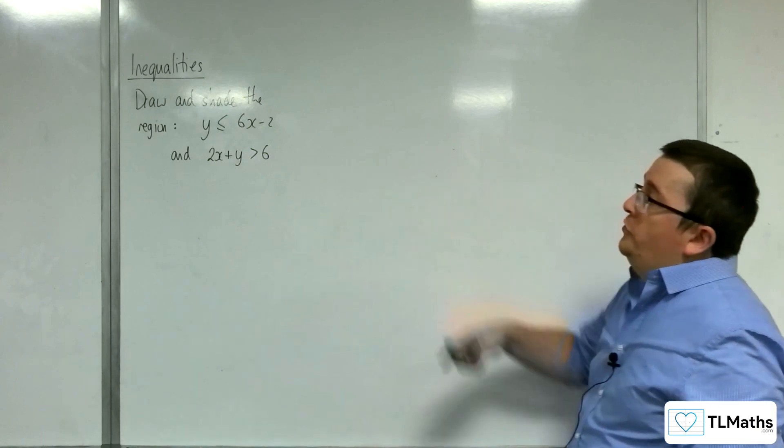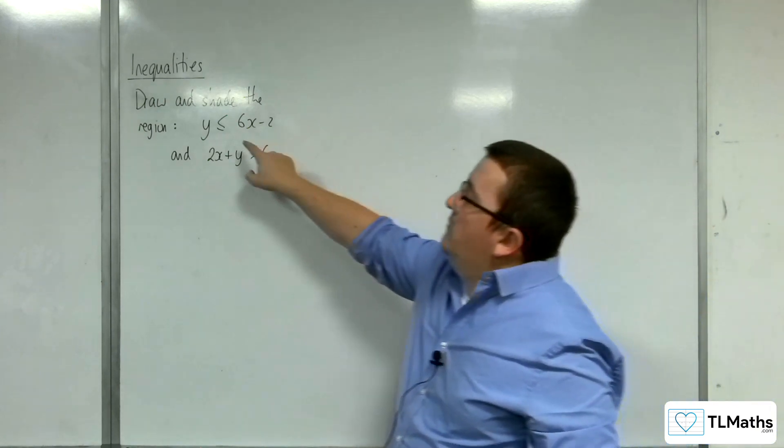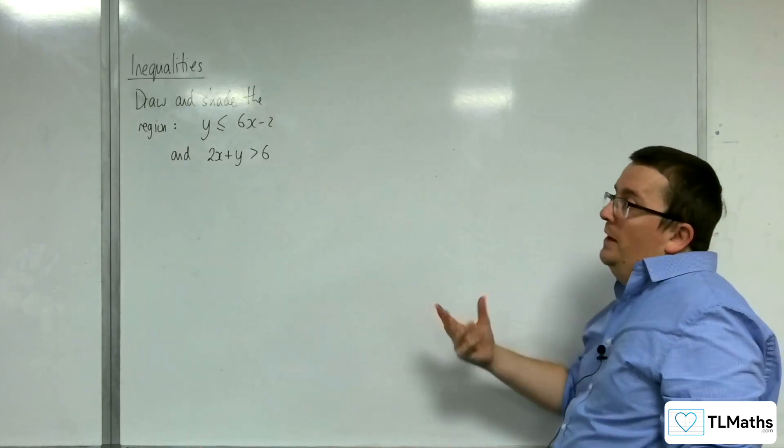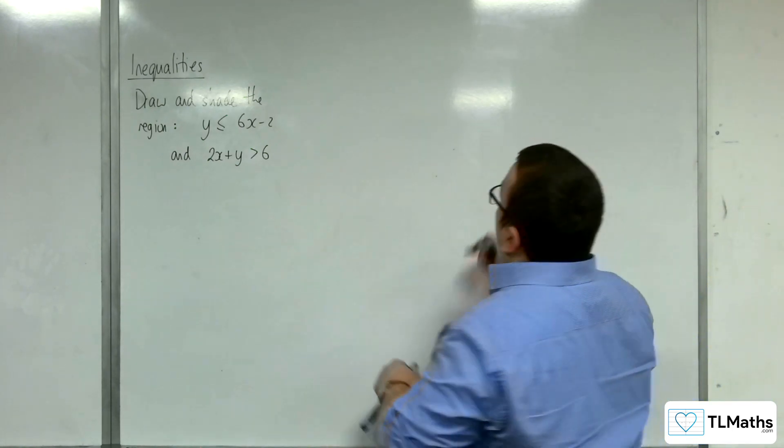Okay, so in this video we're going to draw and shade the region that's given by both of these inequalities. So y is less than or equal to 6x - 2, and 2x + y is greater than 6.